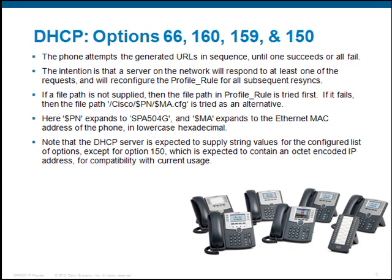When a phone first boots, it will attempt to access a generated URL in sequence until it succeeds or until they've all failed. The phone will look for $PN and then expand it to the model name — for example, SPAR504G — and $MA, which will expand to the phone's MAC address.